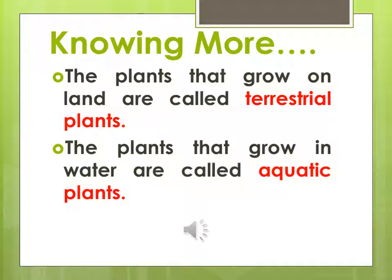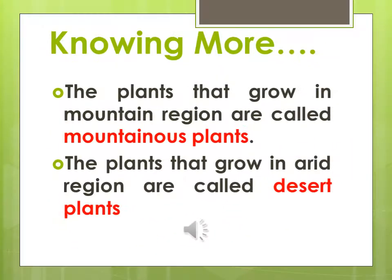The plants that grow in or near water are called aquatic plants, like lily, lotus, etc. The plants that grow in mountain regions are called mountainous plants — for example pine, spruce, fir, hemlock. All these trees grow in mountainous regions. And the plants that grow in arid, sandy regions are called desert plants — for example aloe vera, cactus, etc.